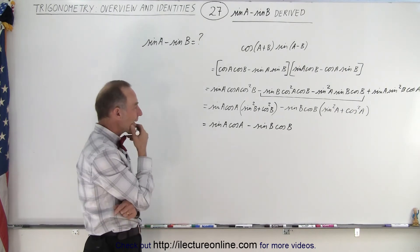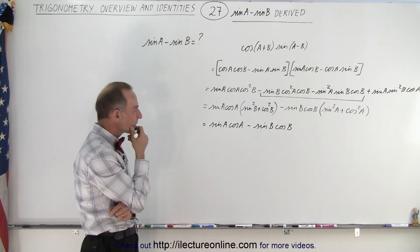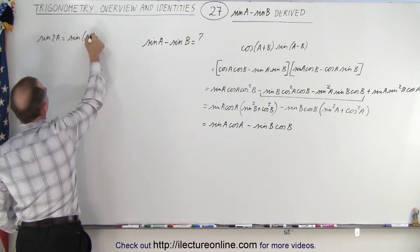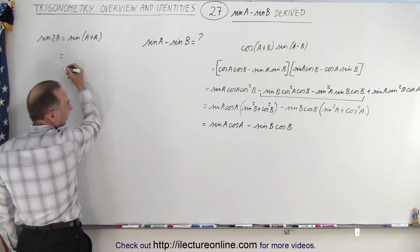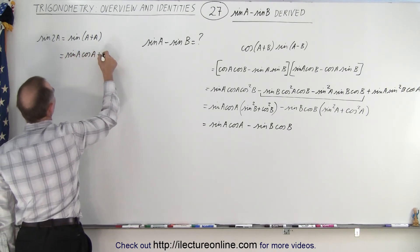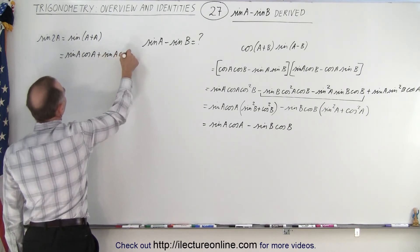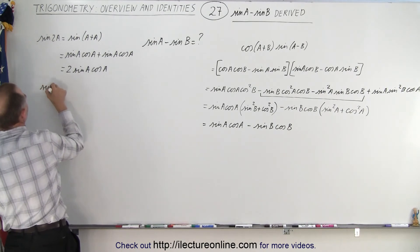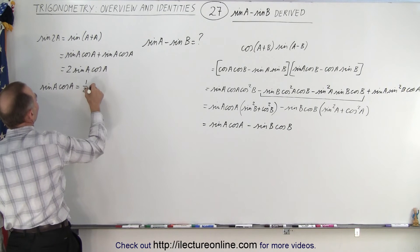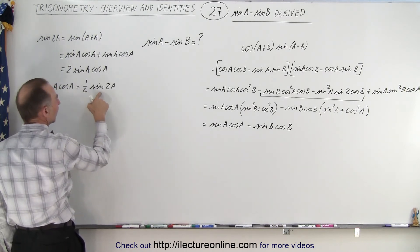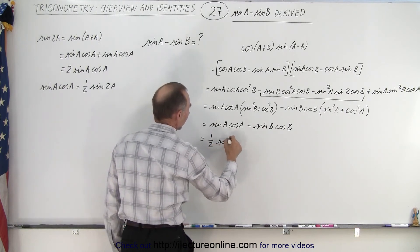Now we also need to realize that when we have the sine of 2a, what do we get? The sine of 2a equals the sine of a plus a, which gives us sine a cosine a plus sine a cosine a, equal to 2 times sine a cosine a. So sine a cosine a equals one half the sine of 2a. I can replace sine a cosine a with one half sine of 2a, so this equals one half sine of 2a minus one half sine of 2b.